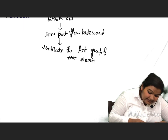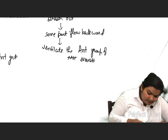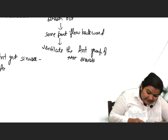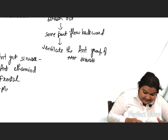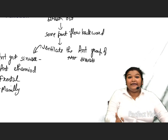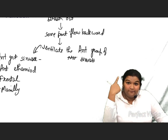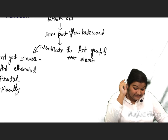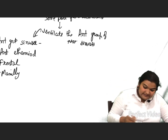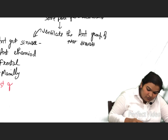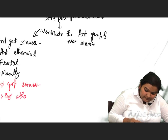What are the anterior group of sinuses? They are the anterior ethmoid, frontal, and maxillary sinuses. The posterior group of sinuses are the posterior ethmoid and the sphenoid.